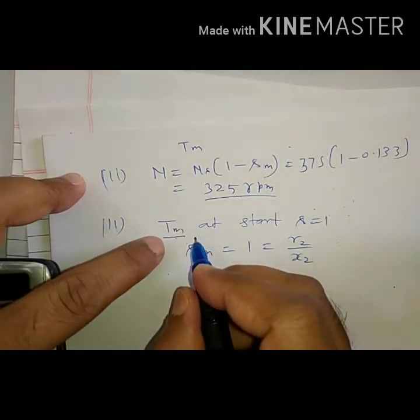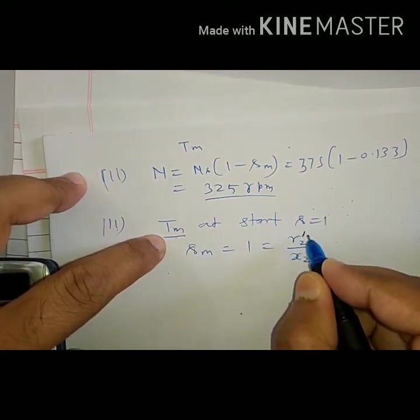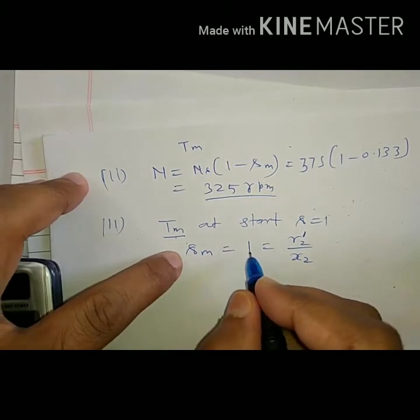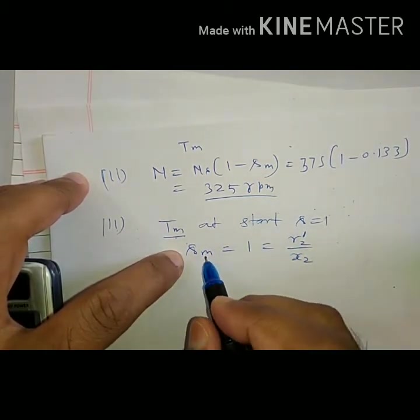But here to have maximum torque, there must be some resistance added. Therefore SM equal to 1. Previously SM was 0.133, but here SM is 1. And it will be only 1, greater than 0.133.